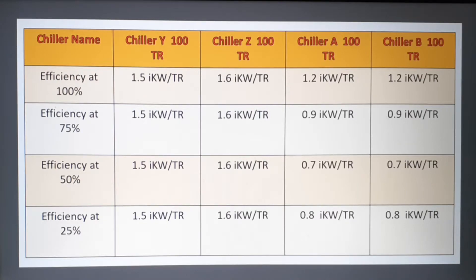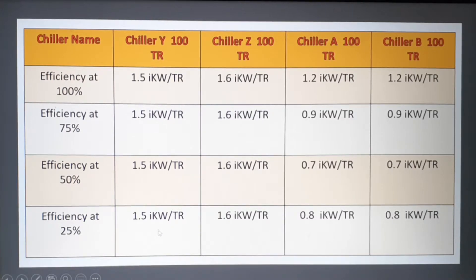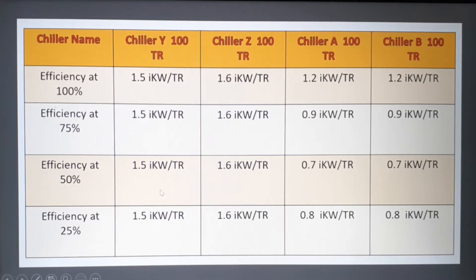People often get confused about what part-load efficiency means. It is simple: if you look at chiller Y and Z, the kW per TR is very constant across all different loading profiles. For chiller Y it is 1.5 kW per TR, and for chiller Z it is 1.6 kW per TR — constant regardless of load.